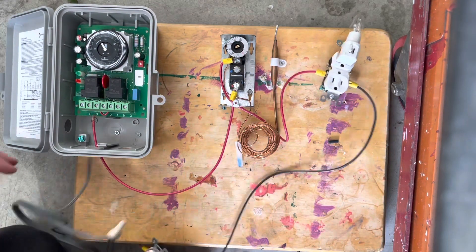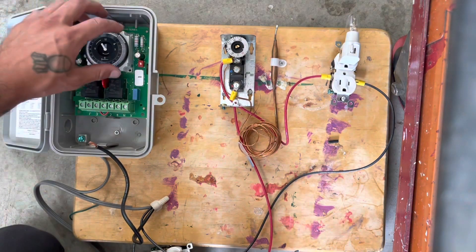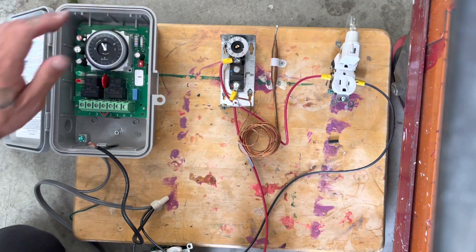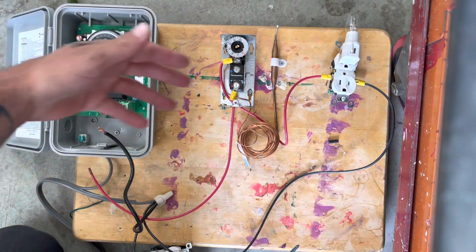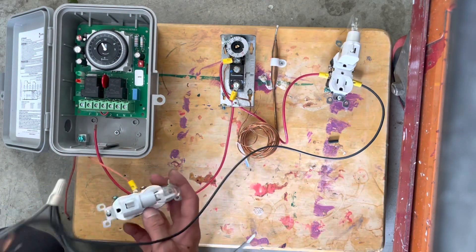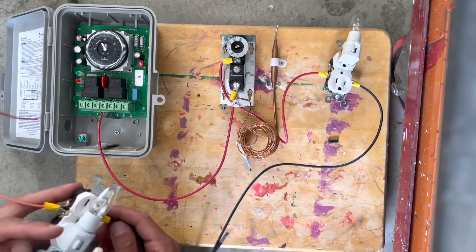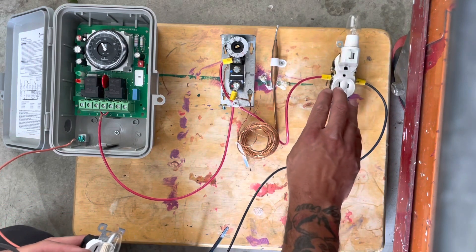Cool, so just go over some more basics about the defrost time clock, essentially a walk-in cooler, walk-in freezer model. This would be our defrost heater, this would be our solenoid.